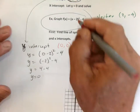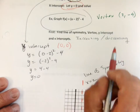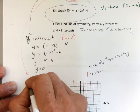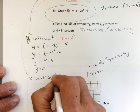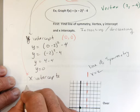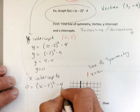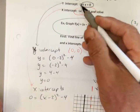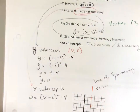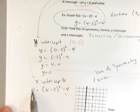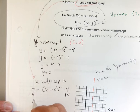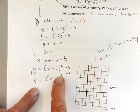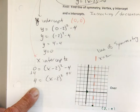For x-intercepts, the formula says let y equal 0. So I'm going to go 0 equals x minus 2 squared minus 4. First thing, I'll add 4 to both sides: 4 equals x minus 2 squared. I'm going to undo the square by square rooting both sides to get rid of the square.